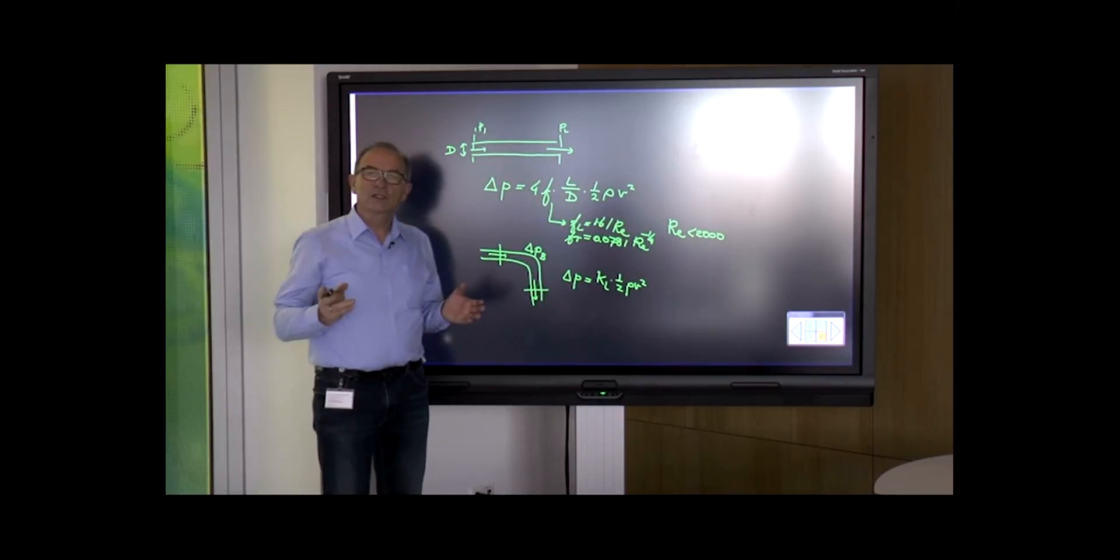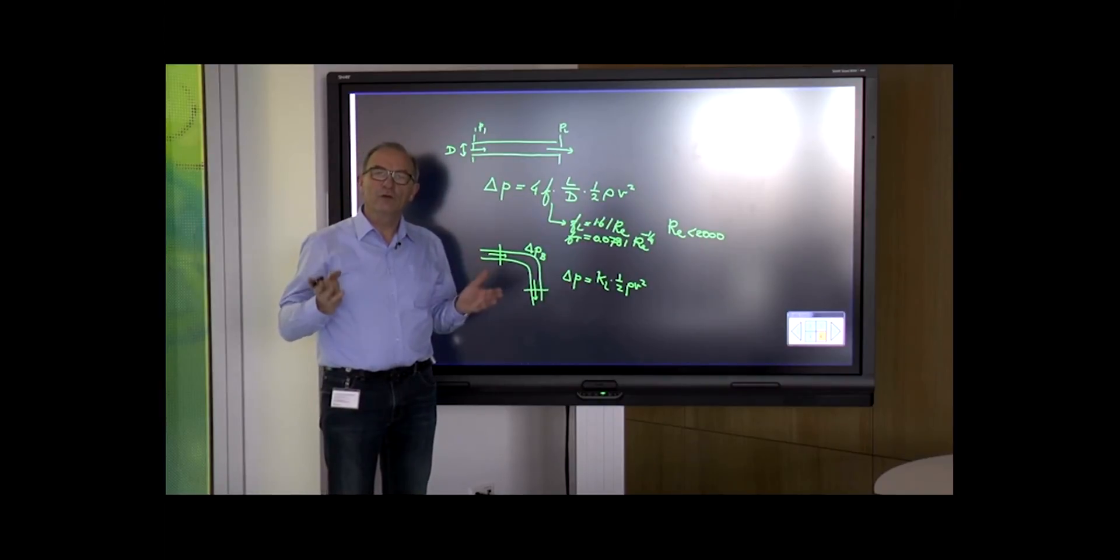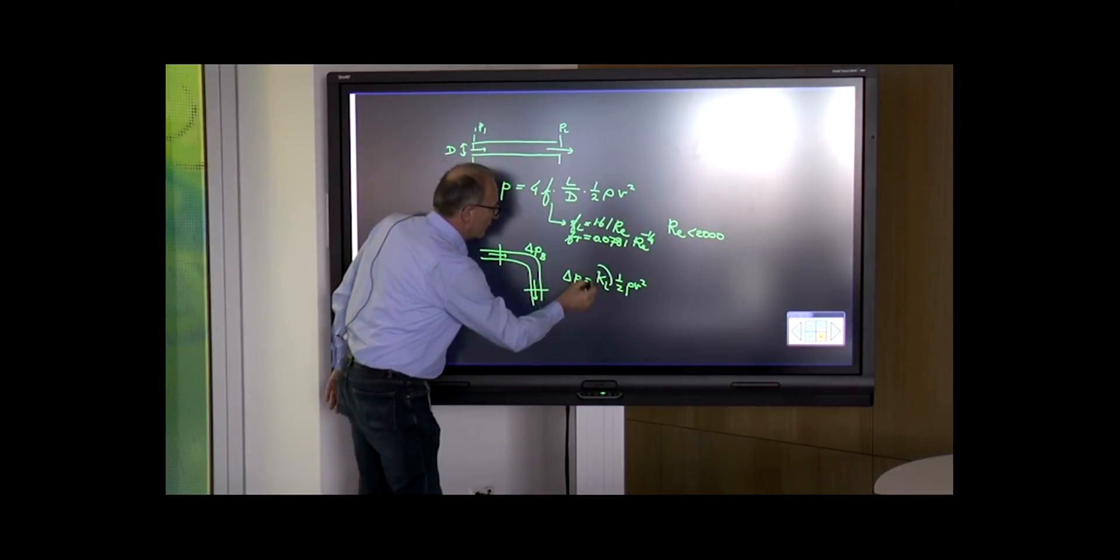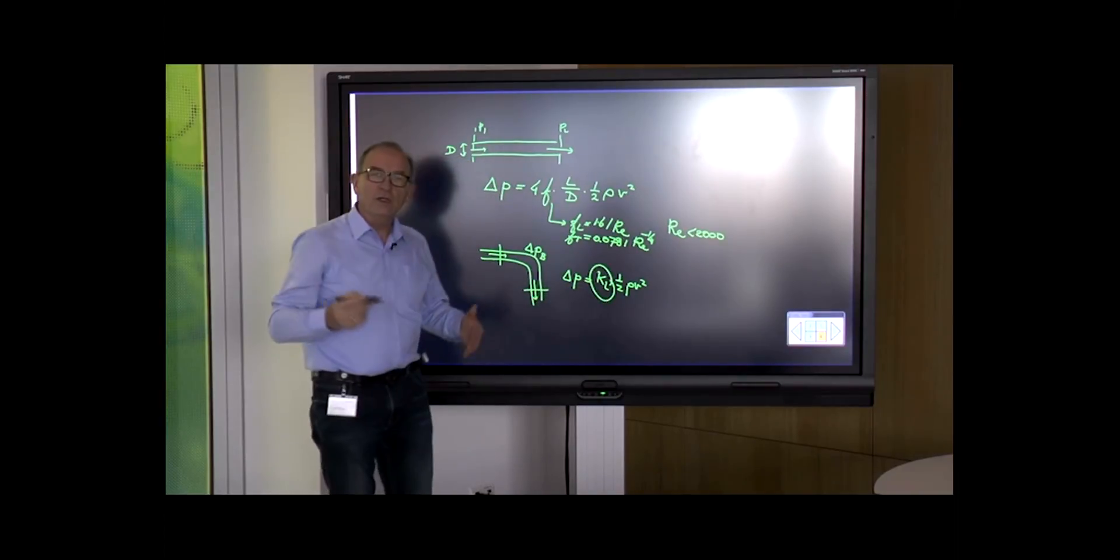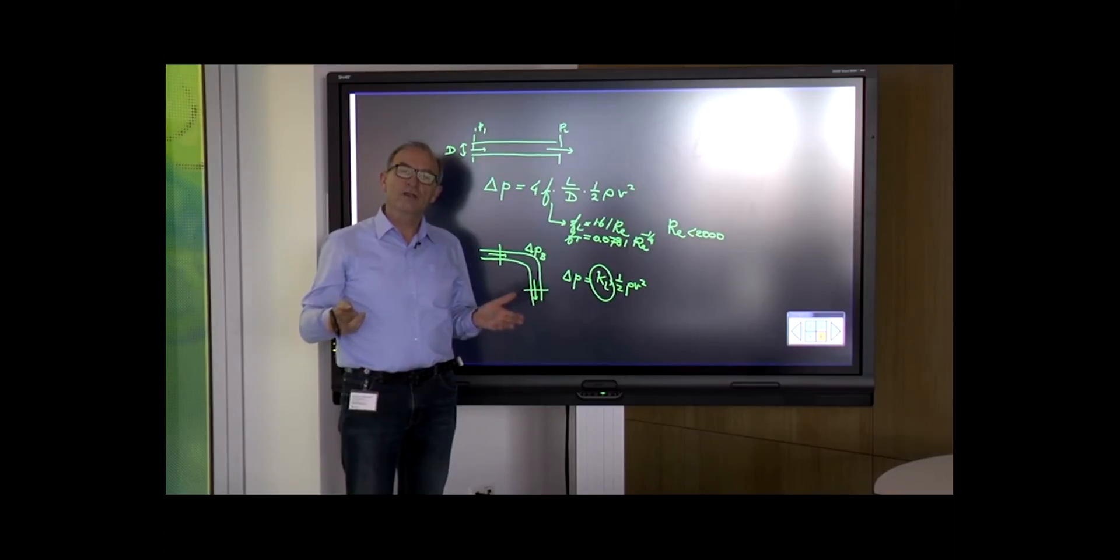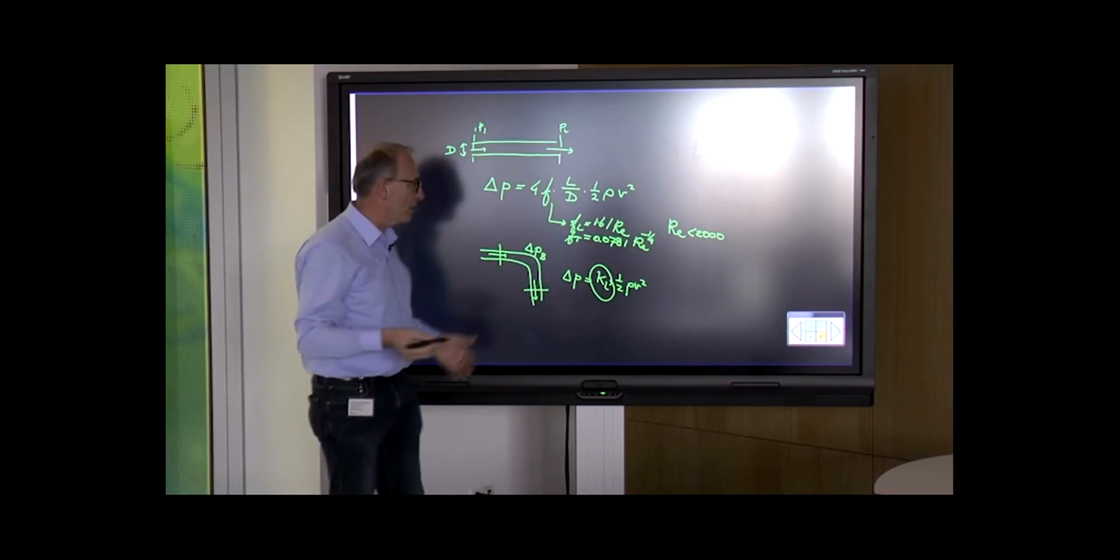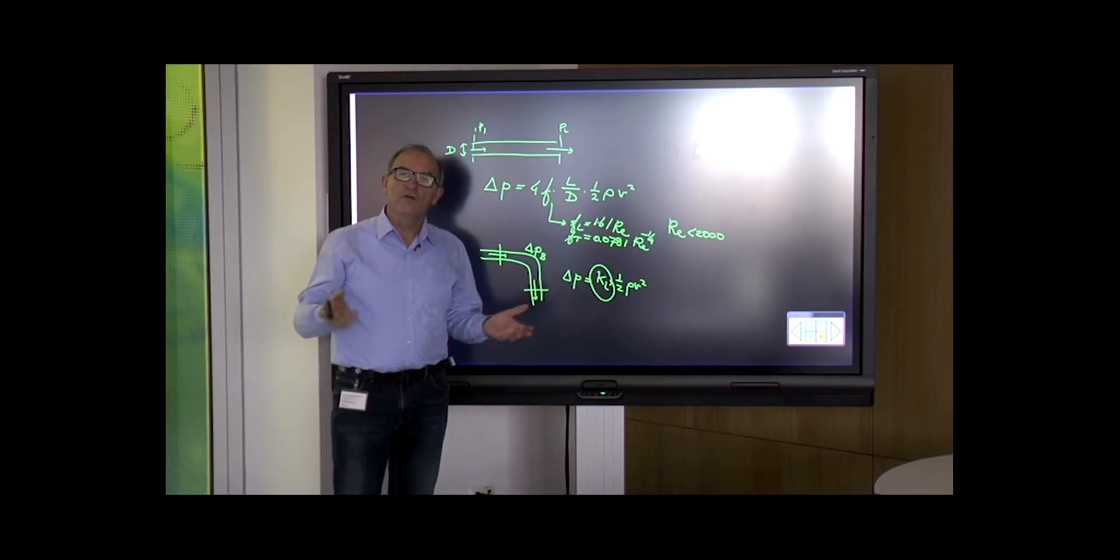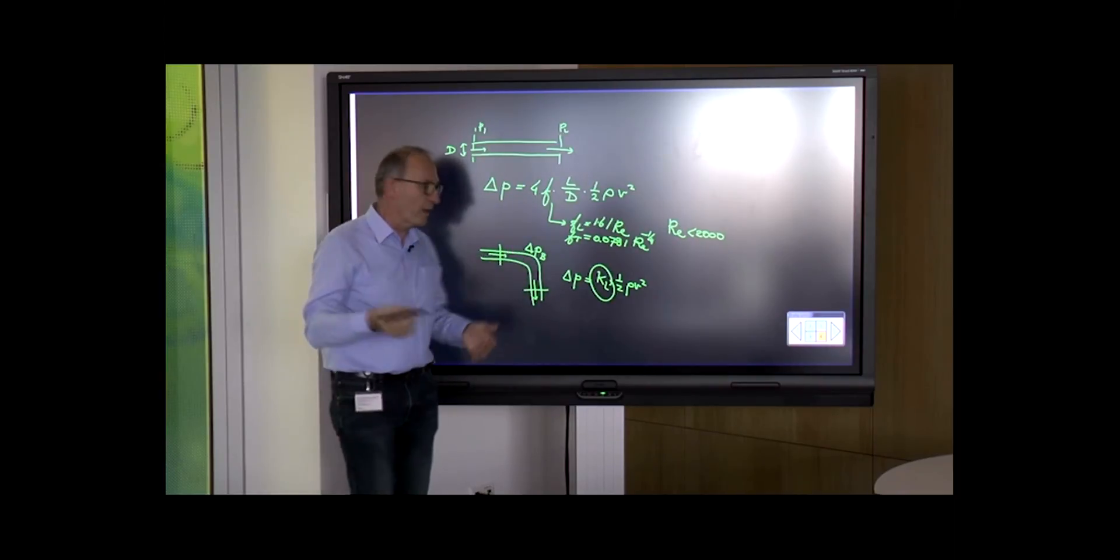Delta P equals the loss coefficient KL multiplied by the kinetic energy per unit of volume. The question is: how do we get the value of KL? The loss coefficient KL can be found in handbooks. We've done measurements and calculated KL afterwards because the geometry of a bend is relatively simple, but it could be a fitting or valve, which is more complex.